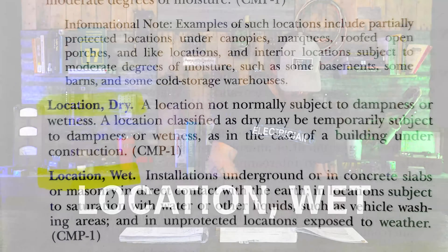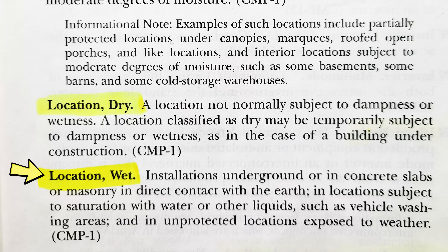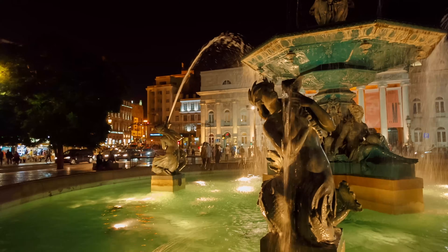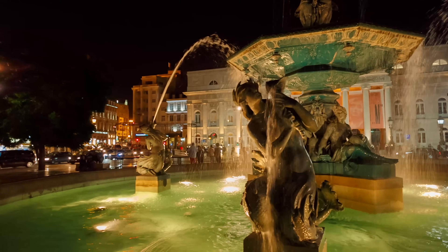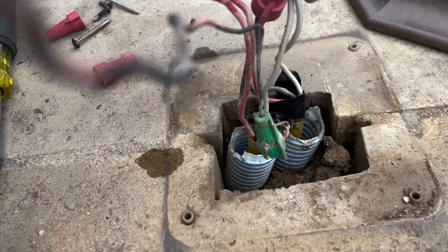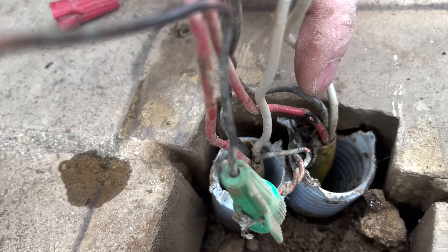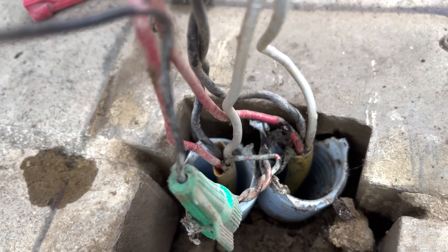That moves us to wet location. A wet location defined by code is an installation underground or in concrete slabs or masonry in direct contact with the earth, in locations subject to saturation with water or other liquids such as vehicle washing areas, and in unprotected locations exposed to weather. So right outside where something is going to get beat on, rain constantly — like a submersible pump — that's a wet location. Any conduit run underground, PVC, that entire environment is wet, because the likelihood of water penetrating is pretty high.